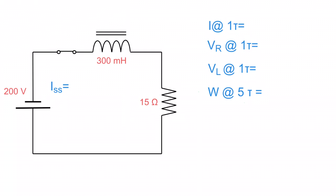These are the things we're going to be working out. We're going to work out ISS, which is current at steady state. Then we'll work out the current at the first time constant (first tau). Then we'll work out the voltage at the resistor at the first tau, and the voltage at the inductor. At the end, we'll talk about W, the energy stored in the inductor after current is up and running.